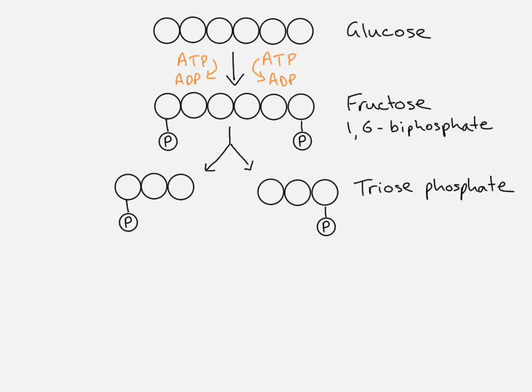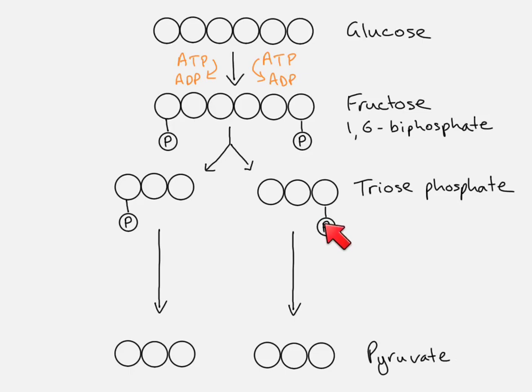And then we have to get to our pyruvate. So our pyruvate is also a three-carbon molecule, but it doesn't have the phosphate group attached. So we have to remove this phosphate group in order to end up with our pyruvate molecules at the end. So what happens then is this phosphate group here on the triosephosphate is donated to ADP, which generates ATP. And as you can see, for each triosephosphate molecule, two ATPs are produced. So in total here, we end up with four ATP molecules being produced.